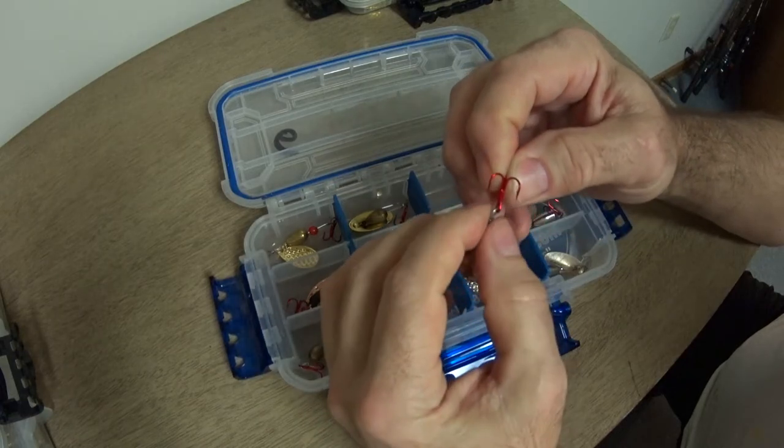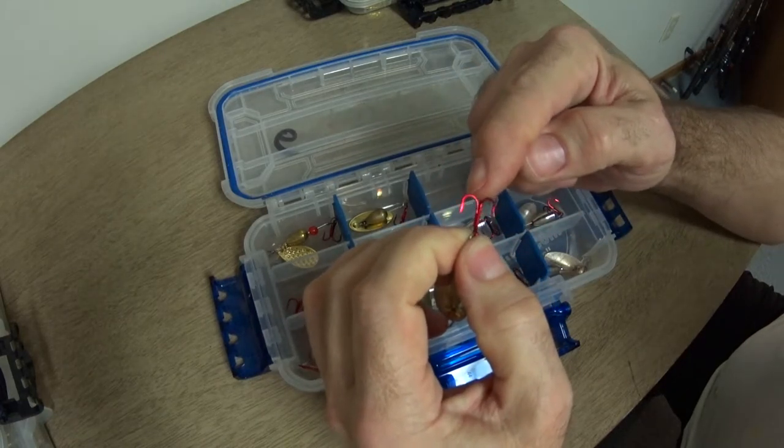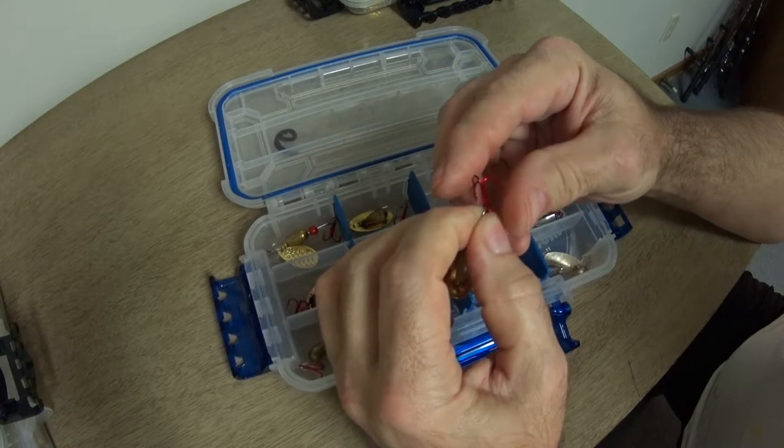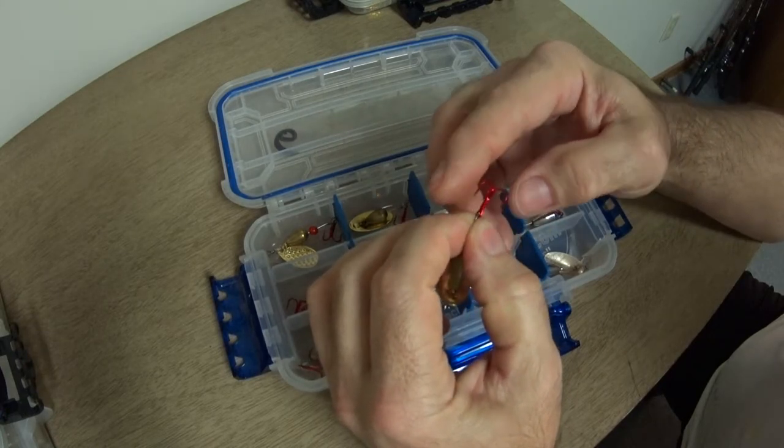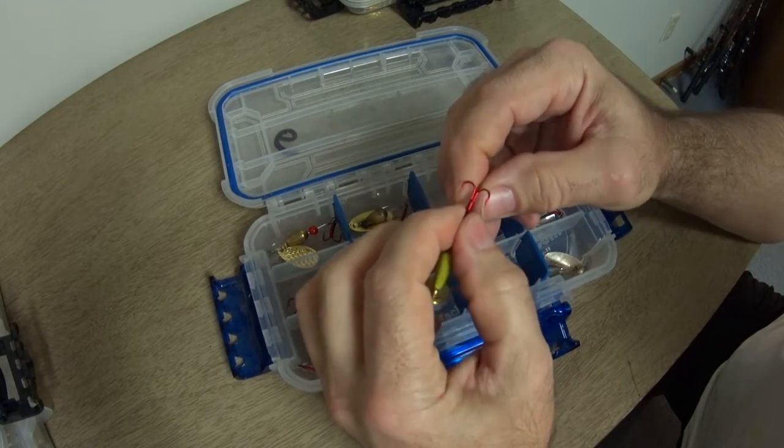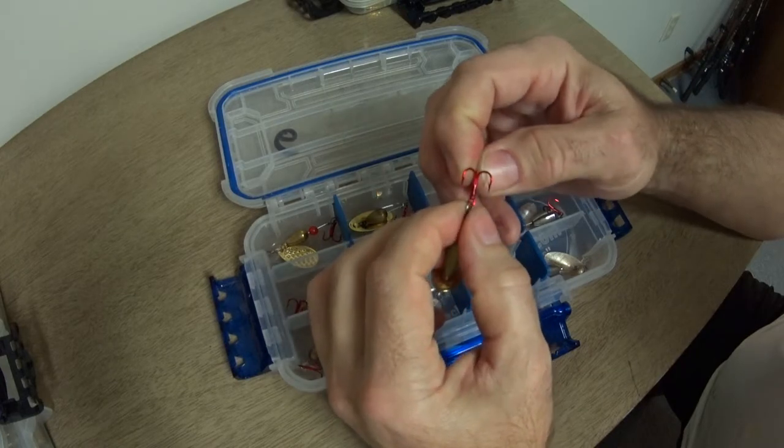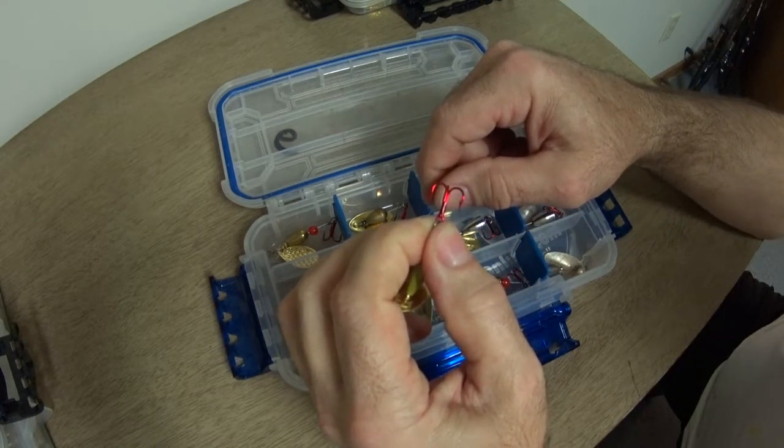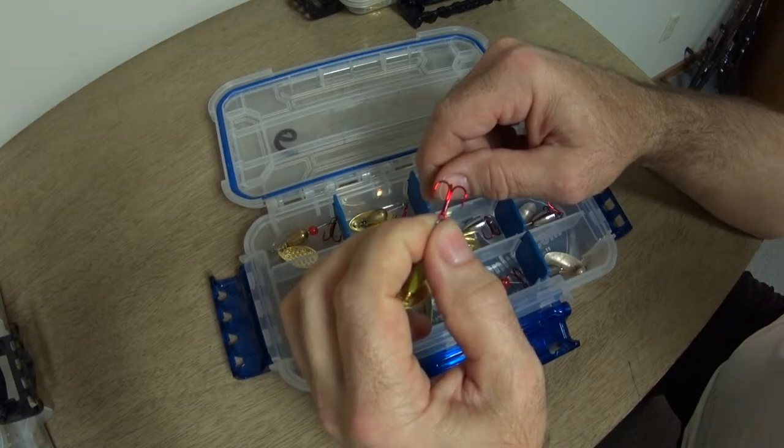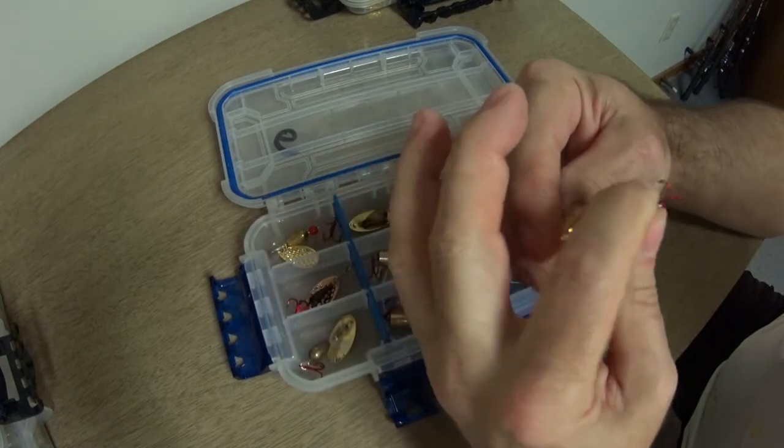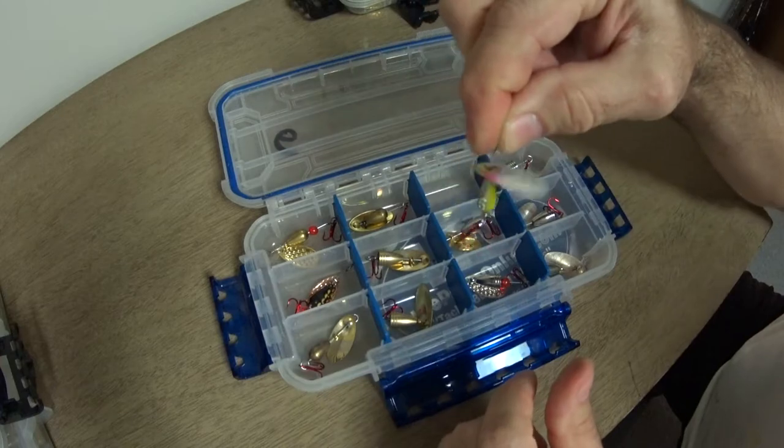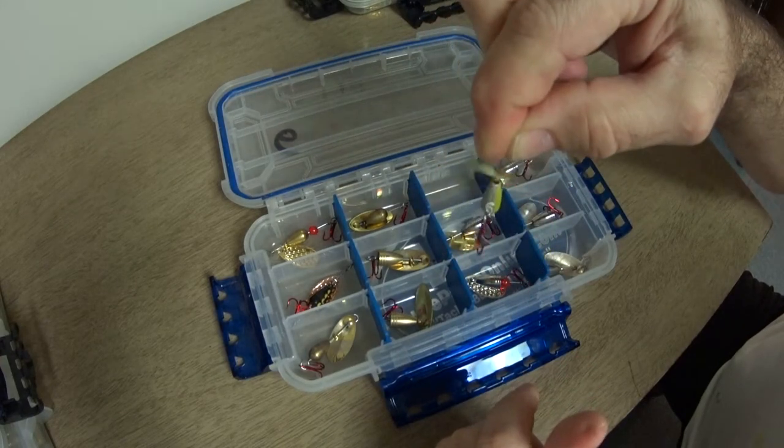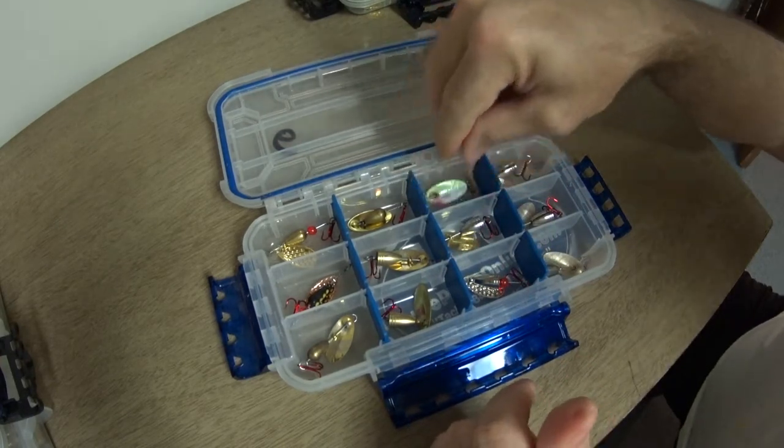And one thing I will say is that these red hooks, these Eagle Claw Laser hooks, they're three times strong, which means they have three welds on the shank. And the red finish does seem to make a difference in terms of fish hitting them. So I like the red hooks, I think they're far superior to the stainless or the bronze finish.